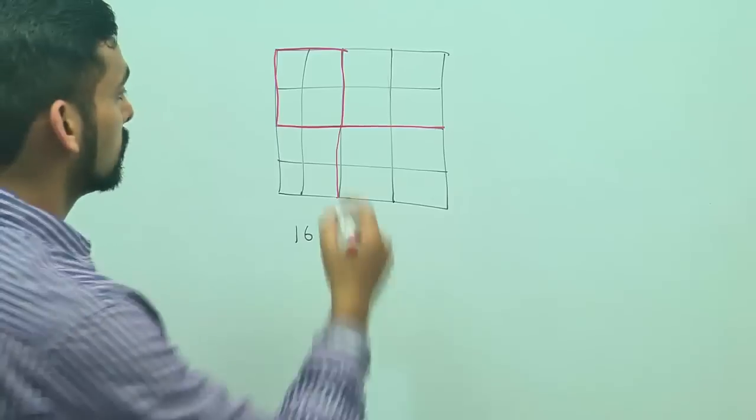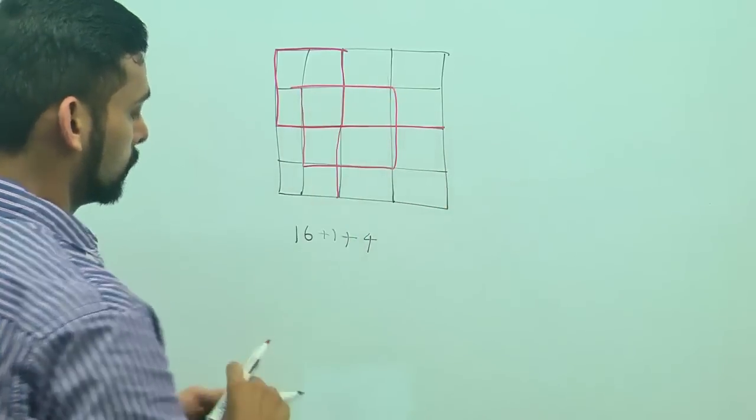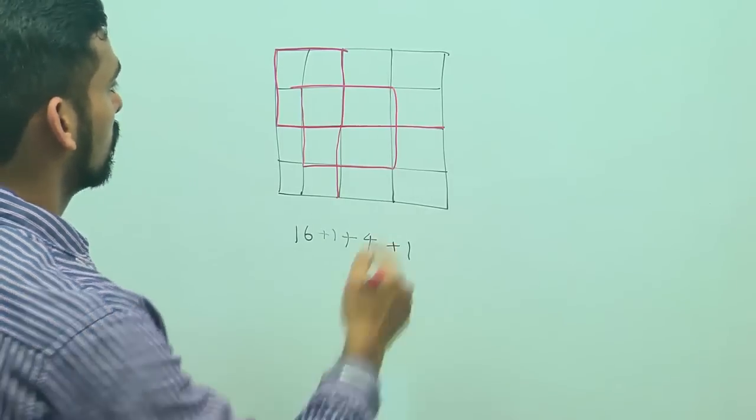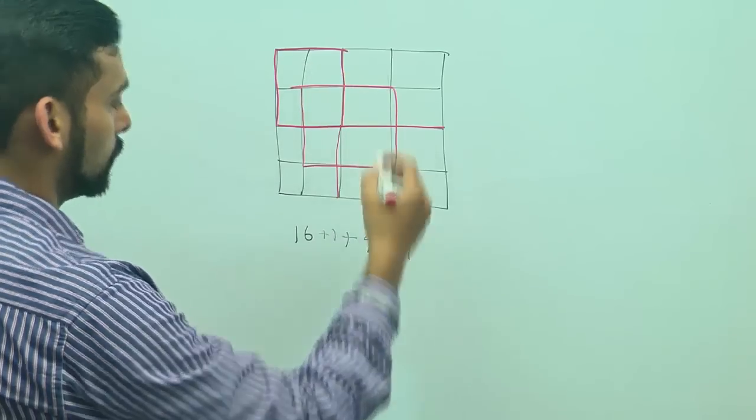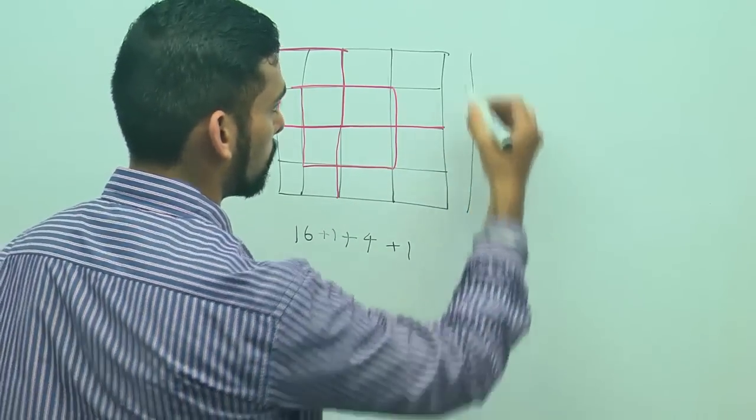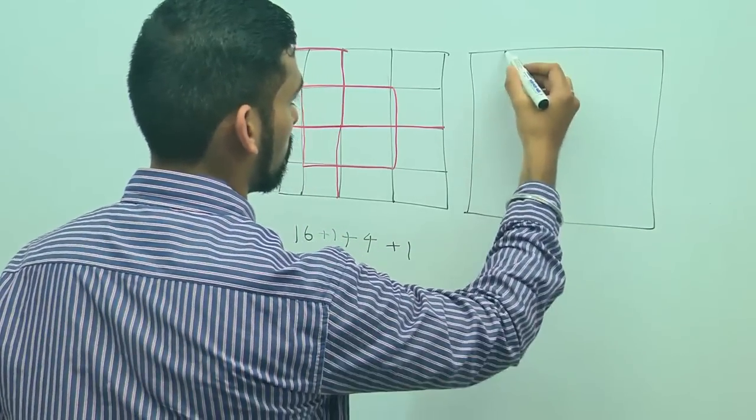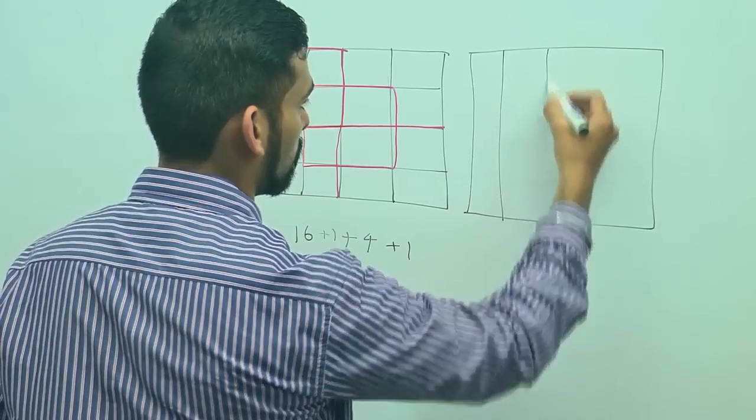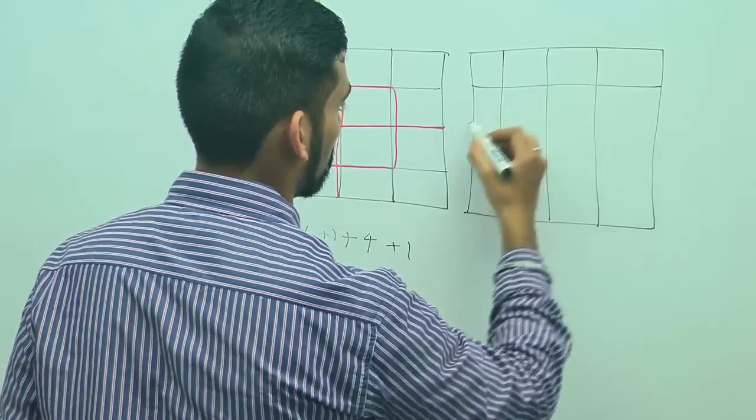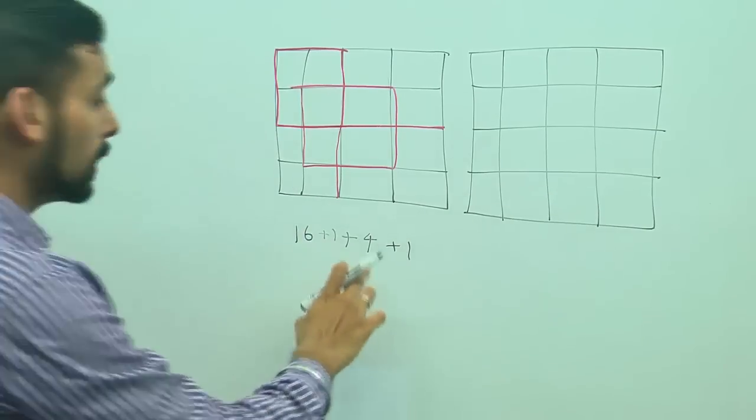Now, in addition to this, there is 1 central square. So, another one. Then, let me make a fresh grid for this one. So so far, I have identified 22.